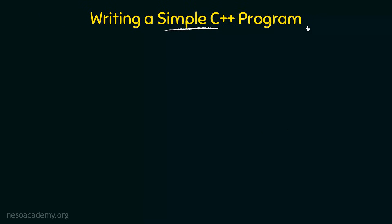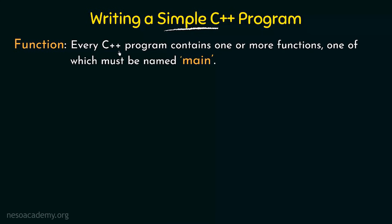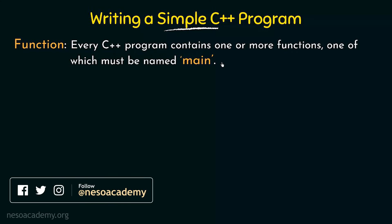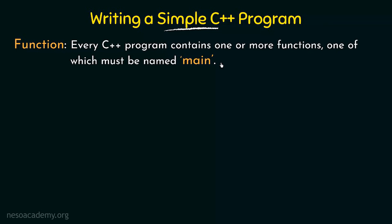Coming to writing a simple C++ program, the first thing that we need to know is about functions. Every C++ program contains one or more functions, one of which must be named main. If you are new to programming you may not know what a function is, but we are going to study about functions in detail in the coming lectures. For now, just understand that a function is nothing but a block of code that is going to perform some operation. Every program in C++ must contain at least one function and one of the functions must be named main.